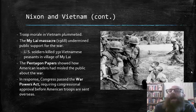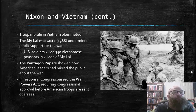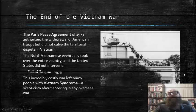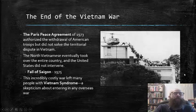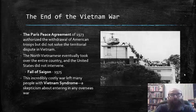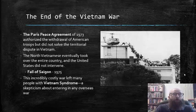In response to the revelations that emerged from the Pentagon Papers, Congress passed the War Powers Act, which required congressional approval before American troops could be sent overseas. In 1973, the United States and North Vietnam negotiated the Paris Peace Agreement, which authorized the withdrawal of American troops from Vietnam.